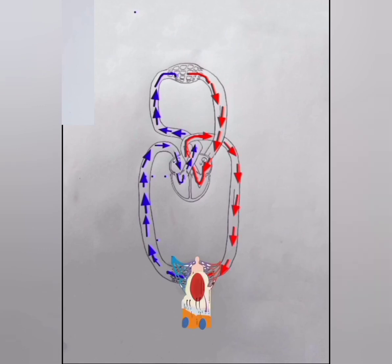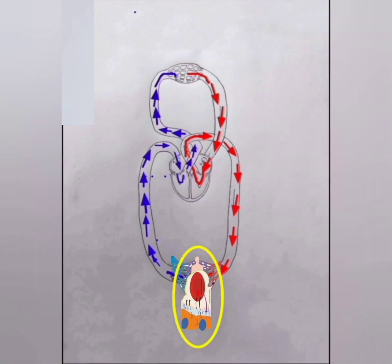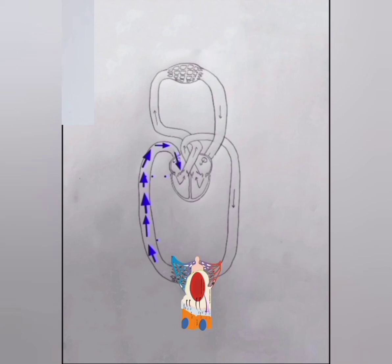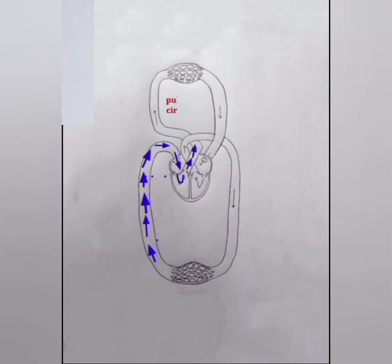This oxygenated blood passes to different parts of the body organs, which contain cells. Cells use this oxygen to carry out metabolic processes and release carbon dioxide into the blood. Now the blood becomes deoxygenated. This deoxygenated blood comes back into the heart by the vena cava. This is the systemic circulation. And the cycle repeats and continues.